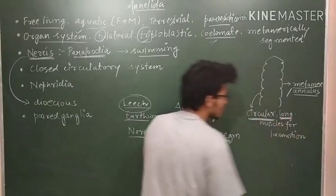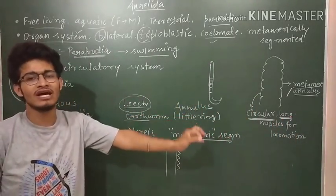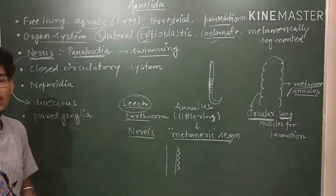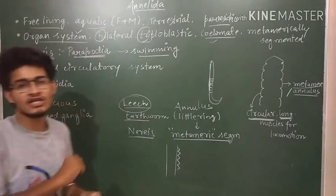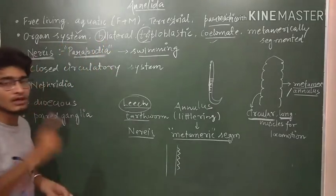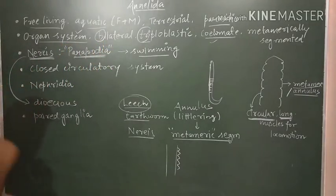So circular and longitudinal muscles for locomotion are present in most of the annelids. In case of Nereis, there are little appendages or parapodia which are present which helps it in swimming. So parapodia is the important word.